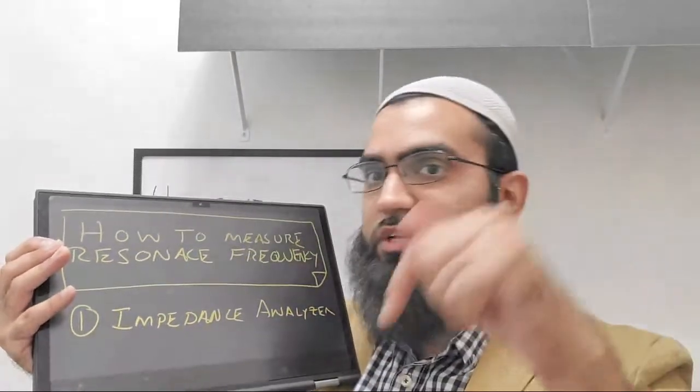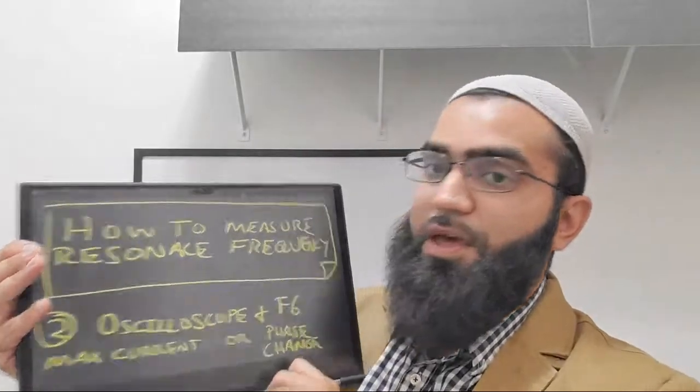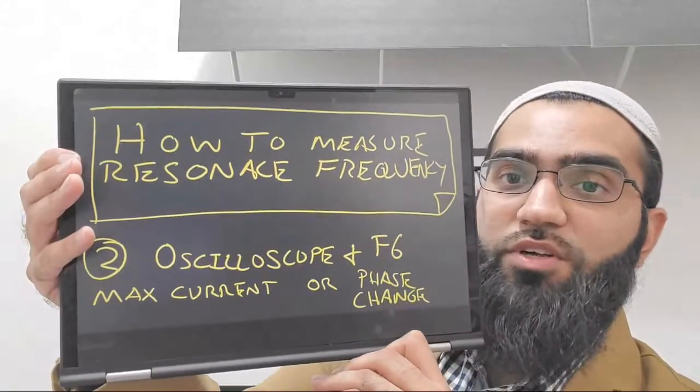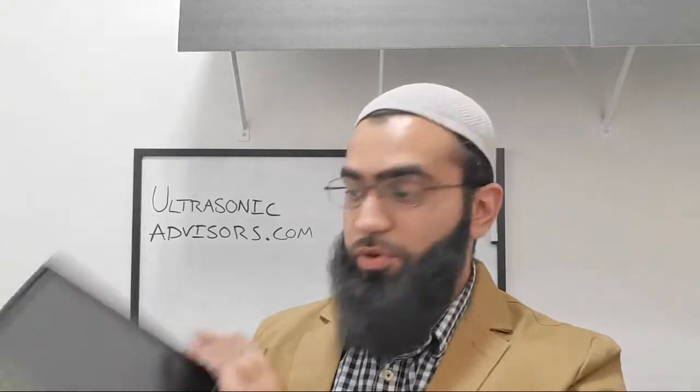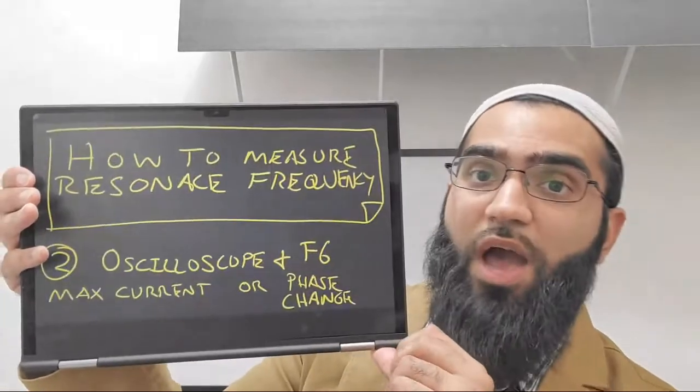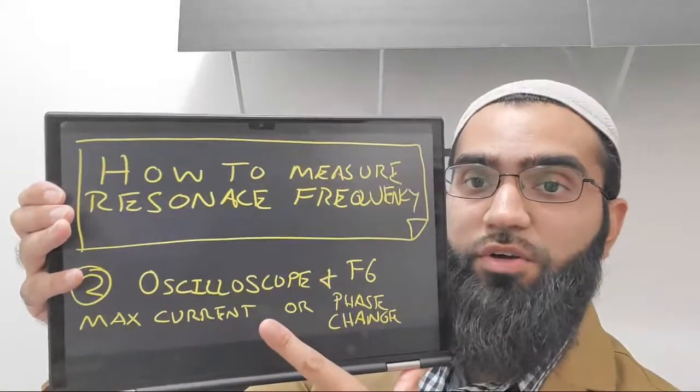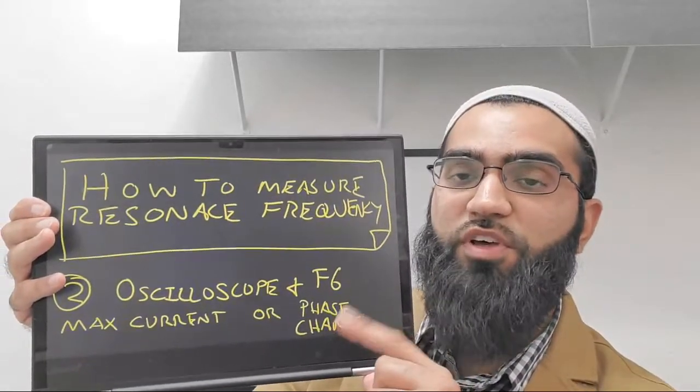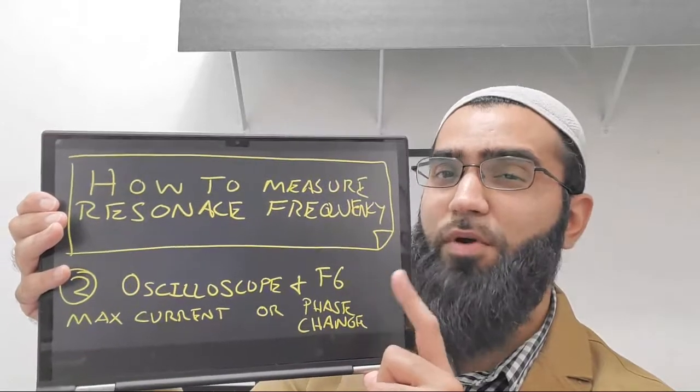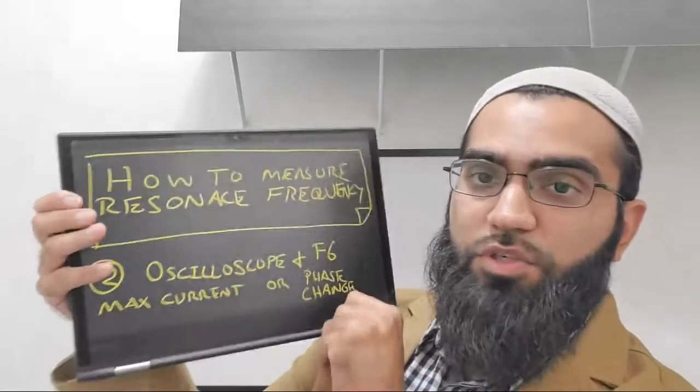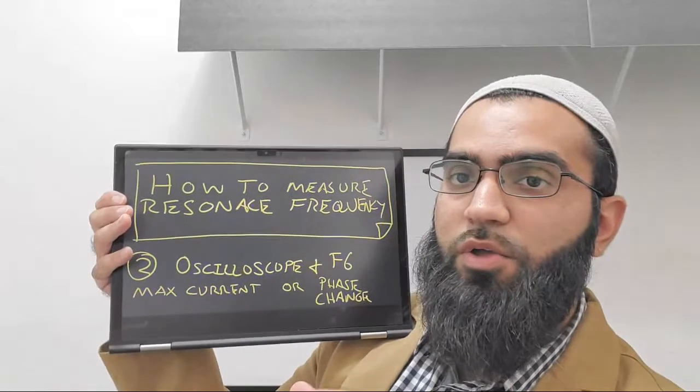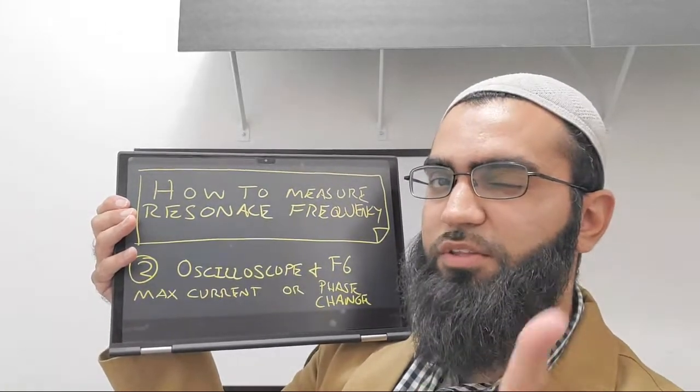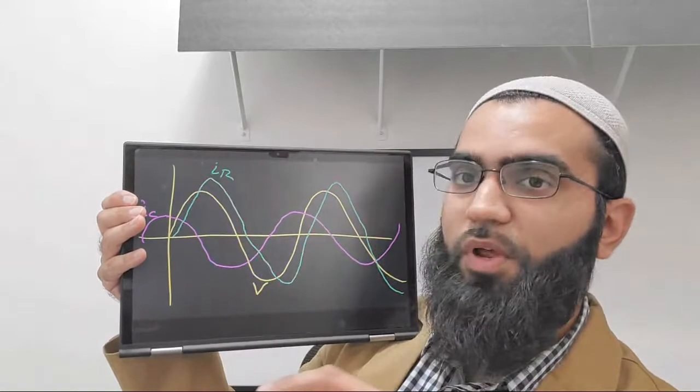The next one is using an oscilloscope and a function generator. I have a kind of popular video on YouTube already. It's kind of old but it still shows the point that when you get your resonance frequency you have maximum current and you also have the phase change, which is related to your power. Both the phase change and power are going to be telling the same story. Power is a little bit easier to pick out most of the time, so I would suggest you take a look at that video. I'll have a link in the description.